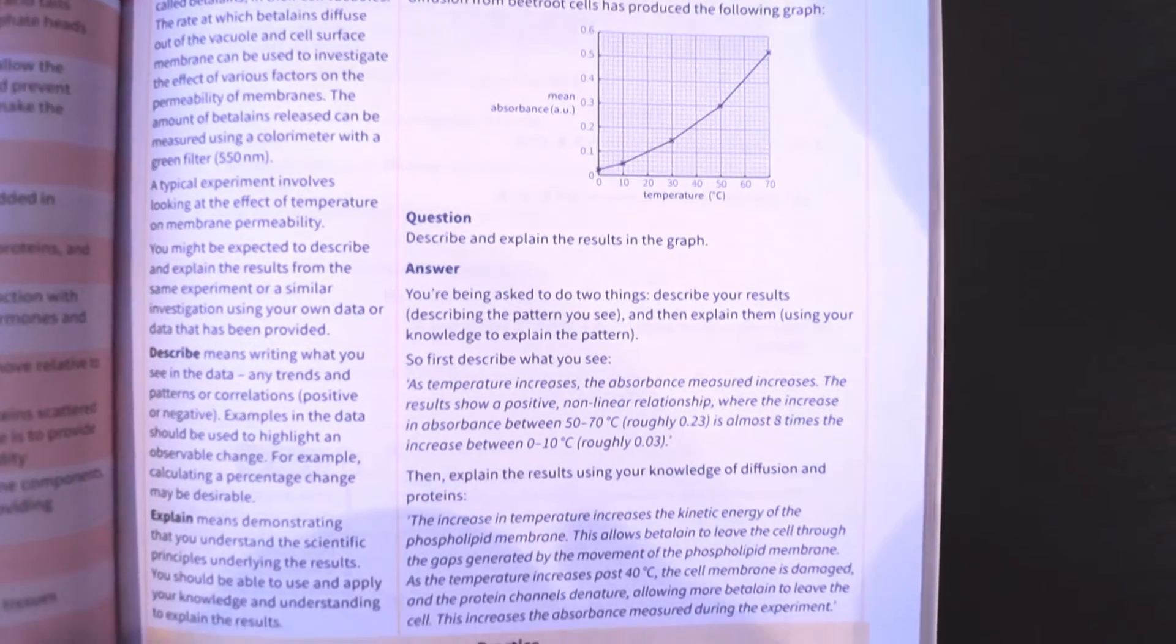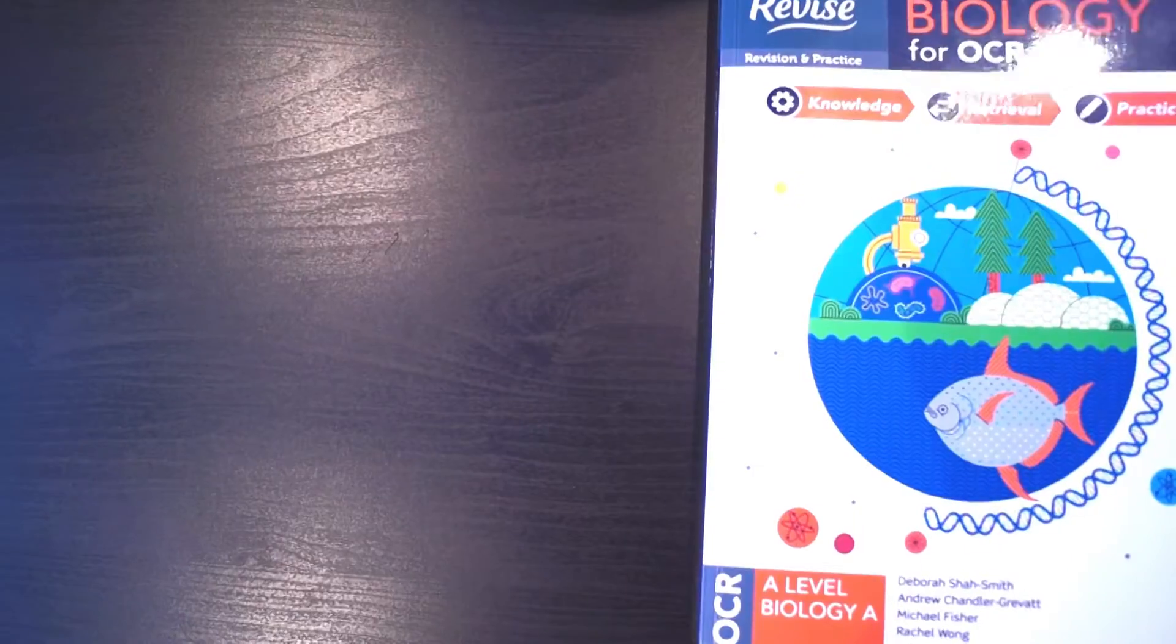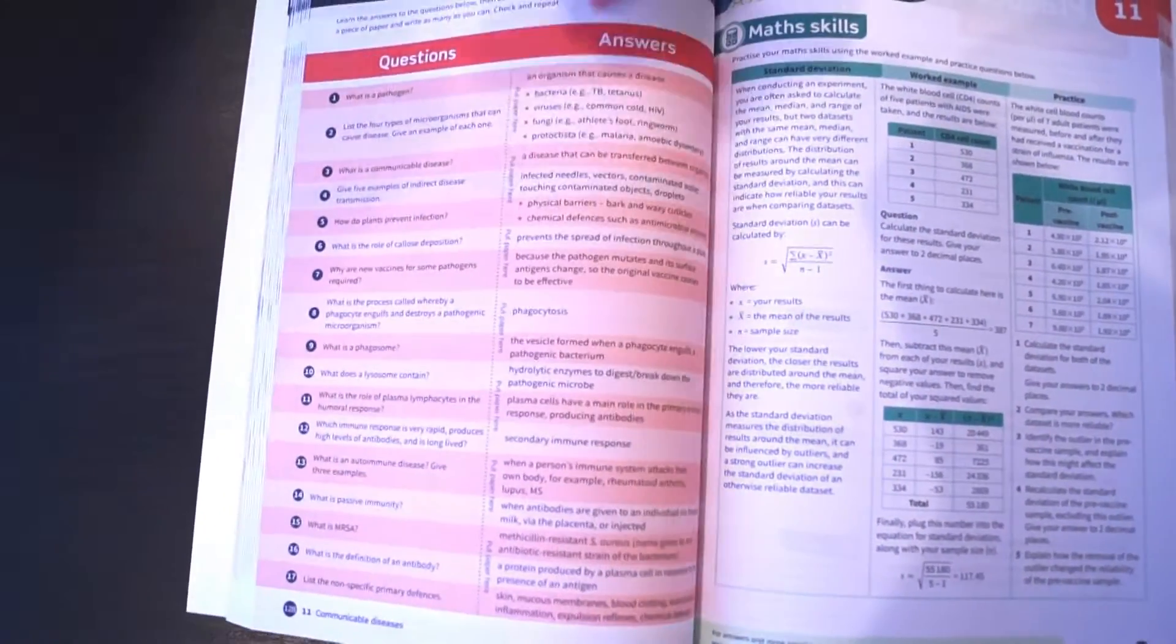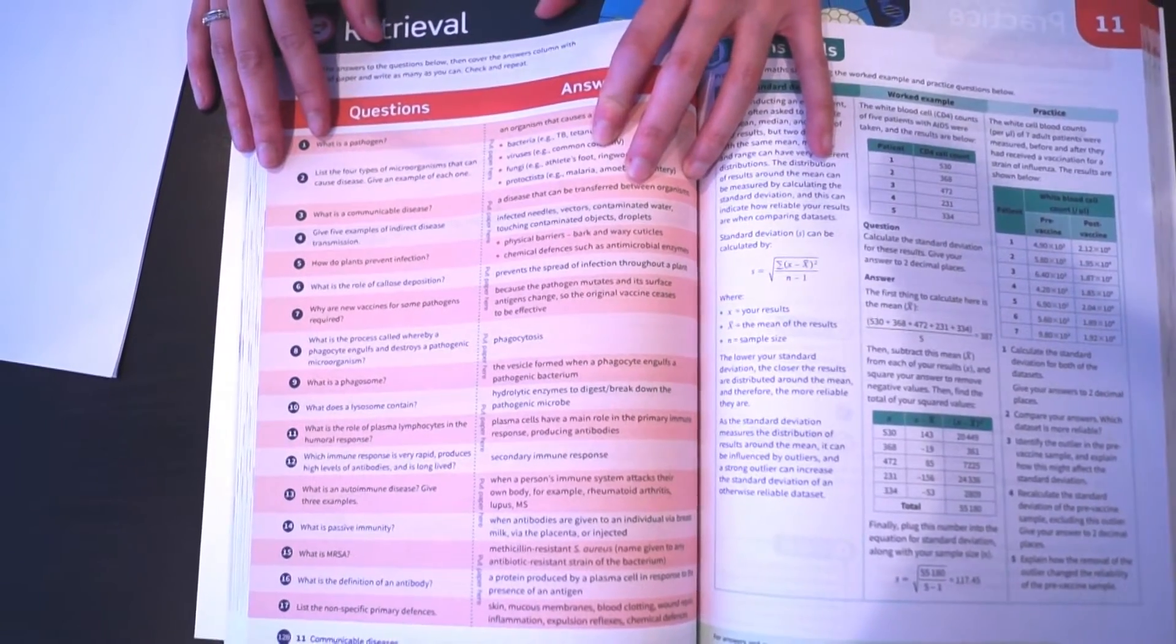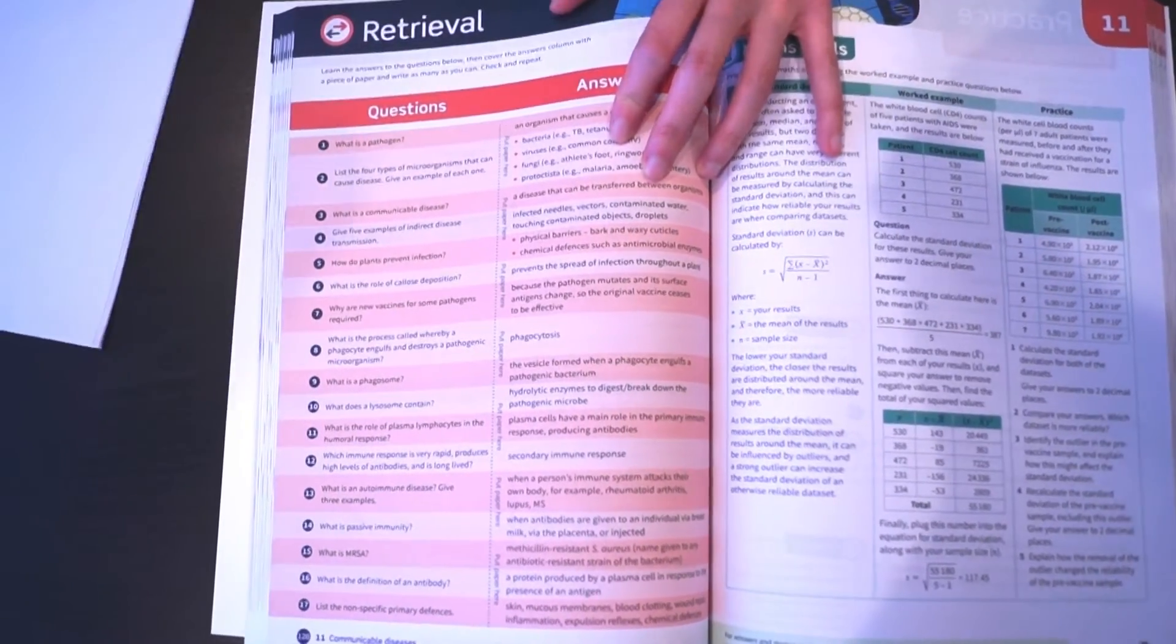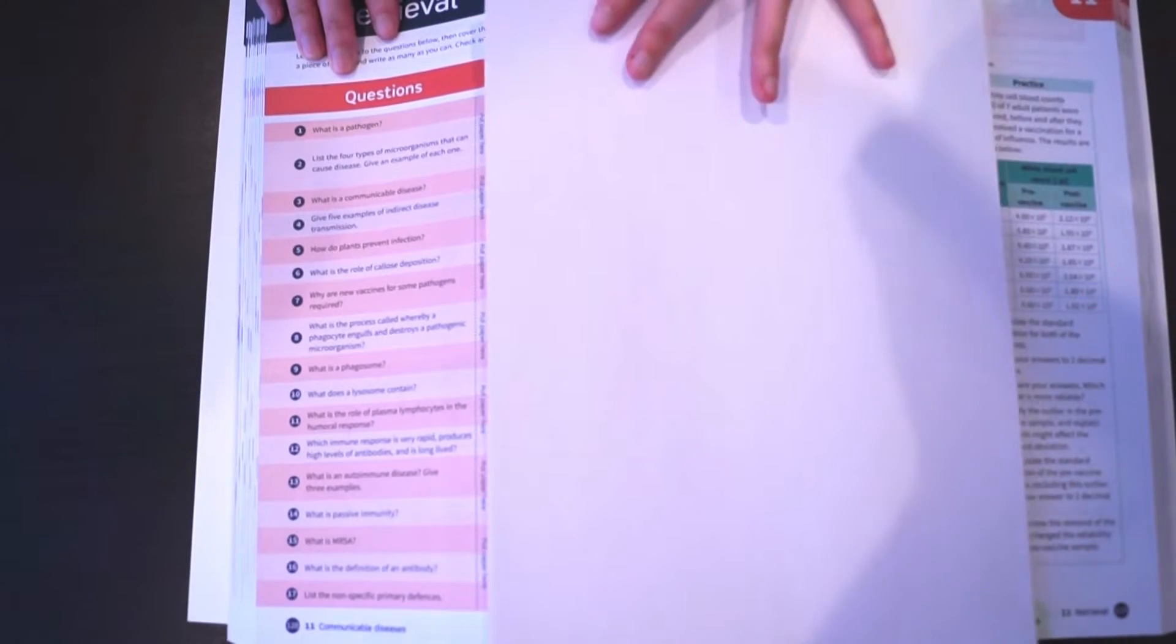Once you've understood the content, it's essential that you memorise all these key facts, and that is why Step 2 Retrieval is so important. In this section, there are a list of key questions for fact recall. All you need to do is cover up the answer column and put down your own answer to each of the questions, then uncover to check how well you've learned the facts off by heart.